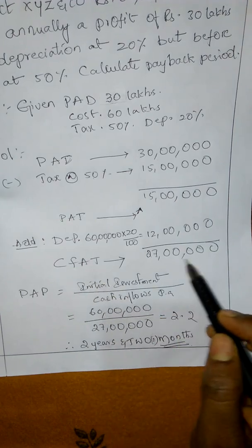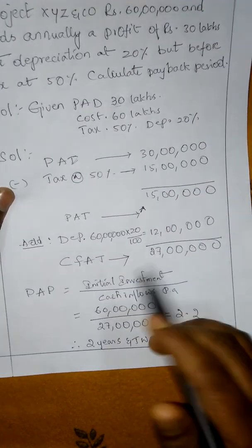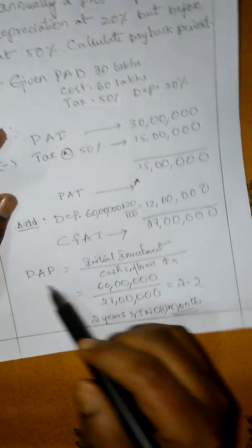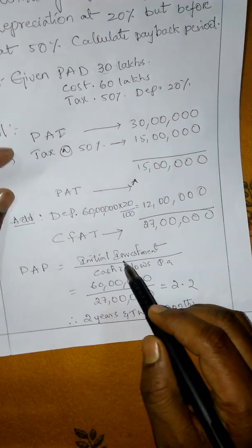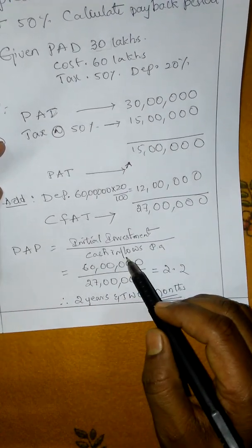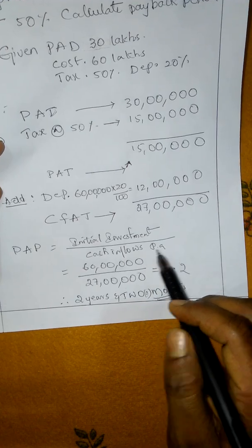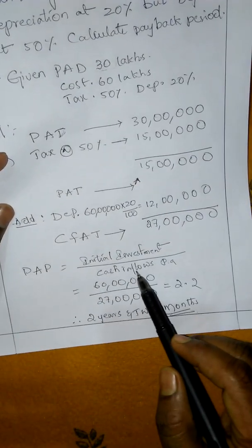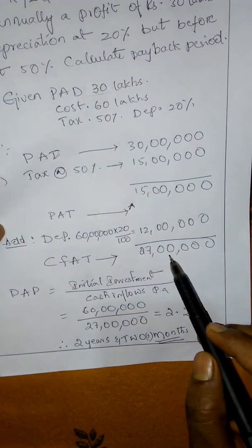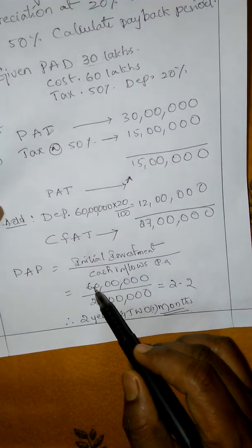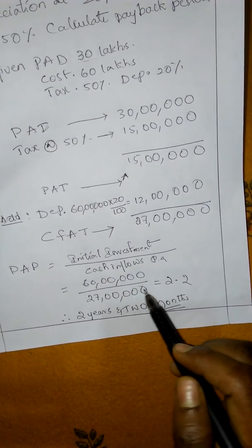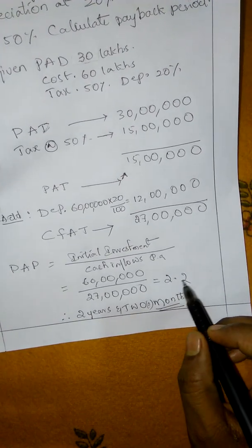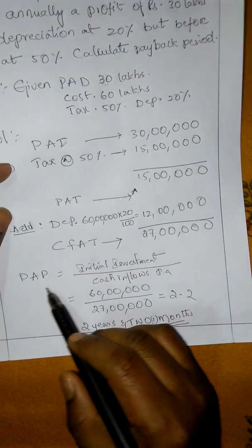So cash inflow after tax is 27 lakhs. Now we calculate the payback period. Payback period is equal to initial investment divided by cash flow per annum. Initial investment is 60 lakhs, cash inflow is 27 lakhs. So 60 lakhs divided by 27 lakhs equals 2.2 — that means 2 years 2 months payback period.